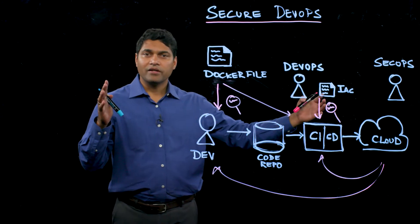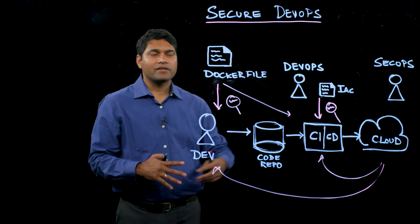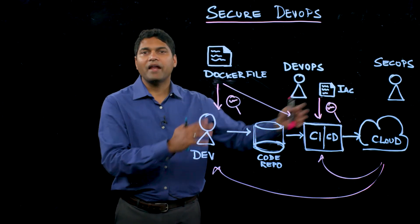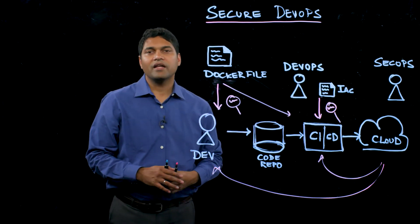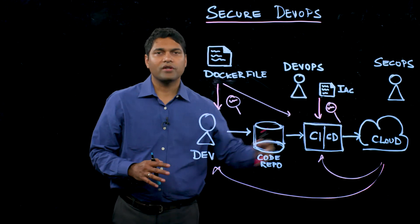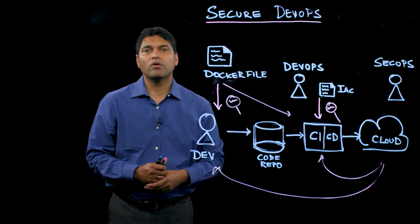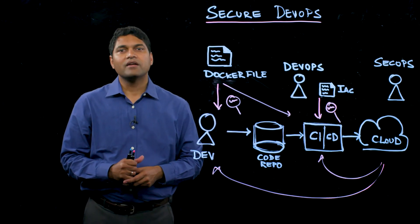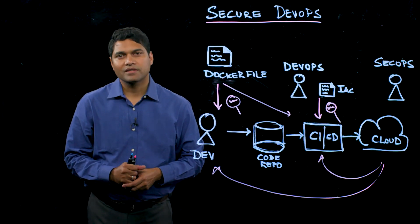This reduces the attack surface area, and security teams can manage risk in a much better fashion in production environments, focusing more on production-related security risks. Secure DevOps is one of the many use cases addressed by Prisma Public Cloud Security Service. Check out other resources which go into more detail on the other use cases as well. Thank you.